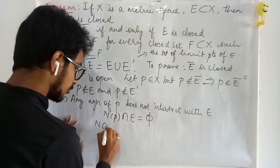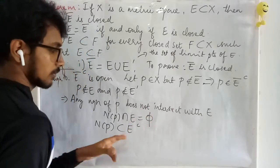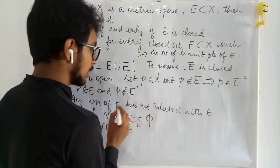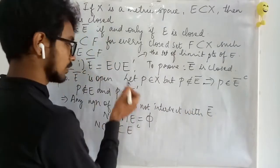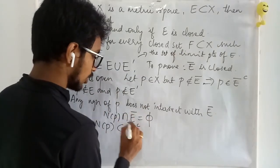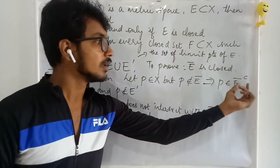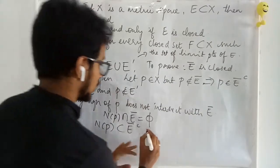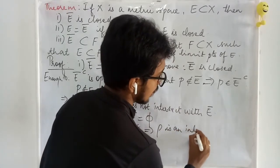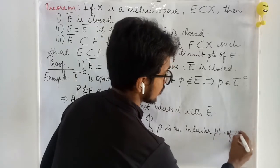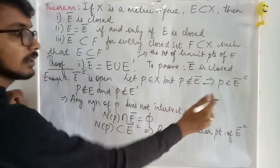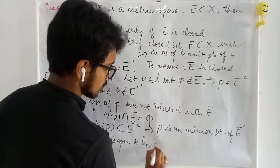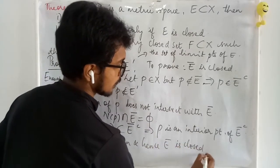Since N(P) ∩ E is empty, N(P) must be completely contained in E-complement. Also, since P is not a member of E, it does not intersect E-bar either. We have taken an arbitrary point in E-bar complement and shown any neighborhood is contained in E-bar complement, so P is an interior point of E-bar complement. This proves E-bar complement is open, and hence E-bar is closed.